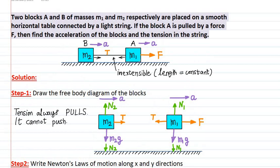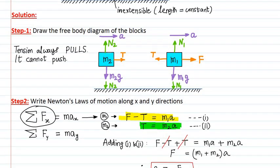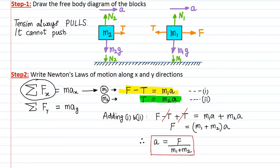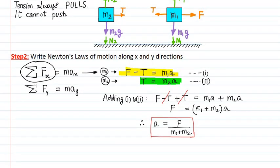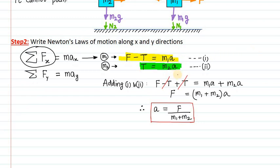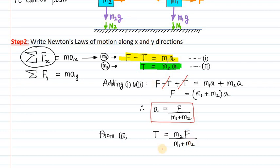Secondly, in this question we also have to find out the tension in the string. Our two equations are sufficient to get both answers. The first answer for acceleration has been obtained. From equation number 2, we can clearly see that tension T equals M2 multiplied by A. Substituting the value of A, tension T equals M2 times F divided by M1 plus M2. So we have found our answer.